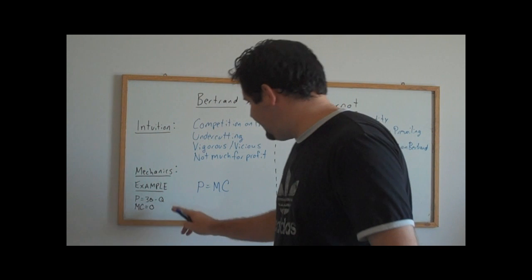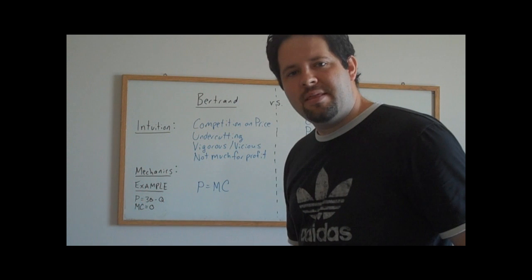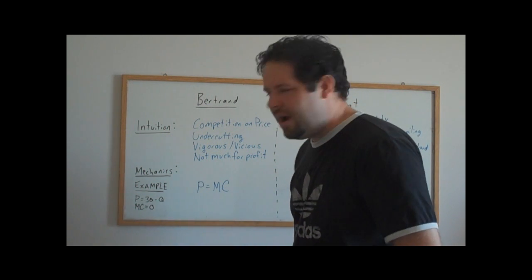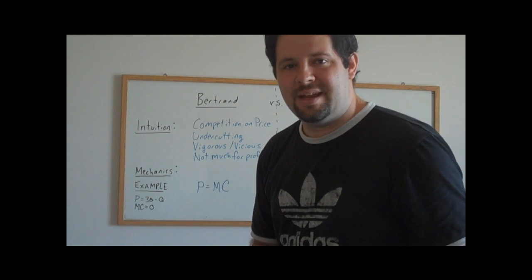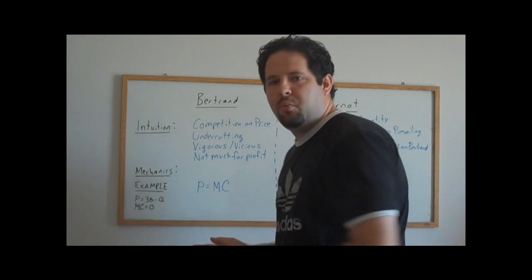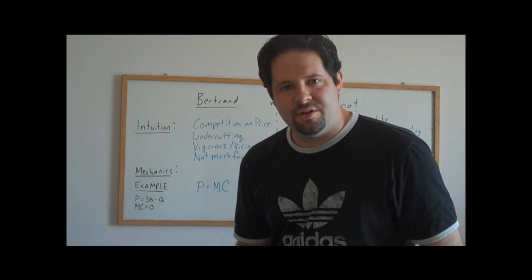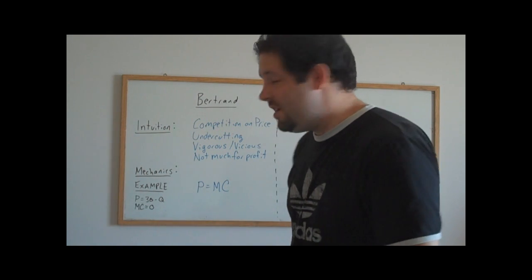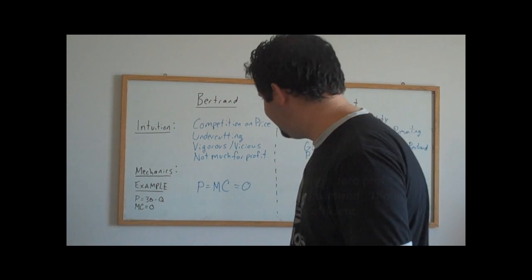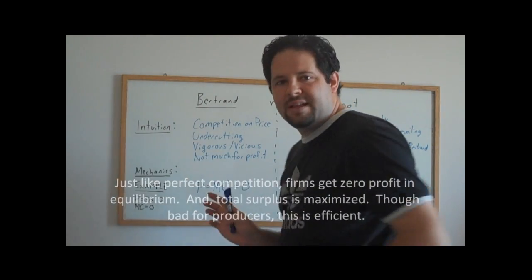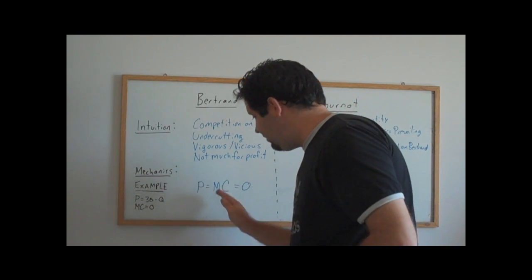So in this case, we would set the inverse demand curve equal to the marginal cost of zero. And that would give us our quantity, the total quantity that would be sold in this market. And then because they set the same price in equilibrium, what we'll end up with is we'll end up with them splitting the market, each producing 15 at a price of zero in this case. As you can see, this is very vicious competition. We get a price of zero, and neither firm makes any profits. So that's a really bad situation, and that's really all you need to know about the mechanics of Bertrand competition: price equals marginal cost.